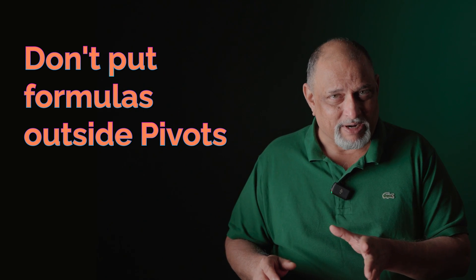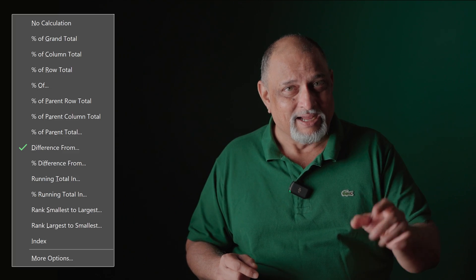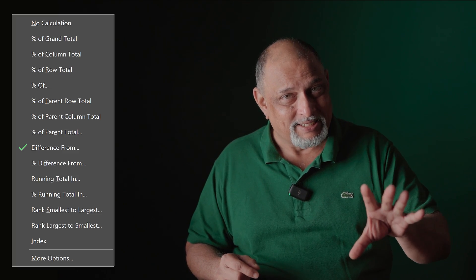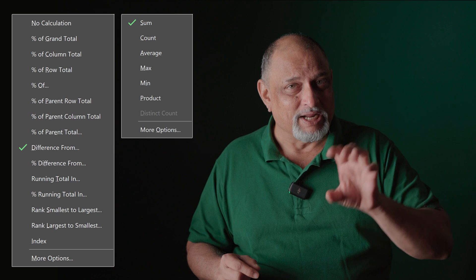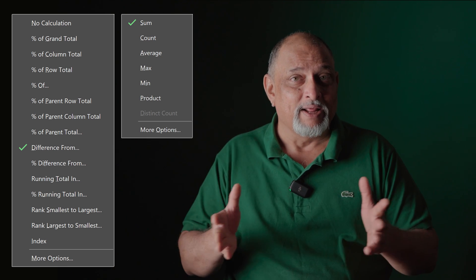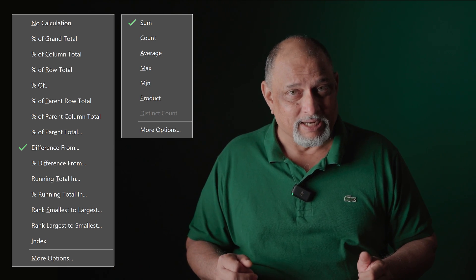Another common bad habit is putting formulas outside the pivot table. But many people have no idea that what they are trying to do by putting a formula outside the pivot can be done by the pivot itself. Right-click in the data area and look at 'Show Values As' and 'Summarize By' — whatever you are trying to do outside may already be available there.